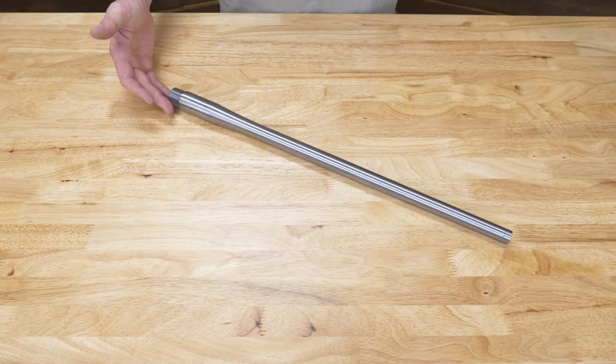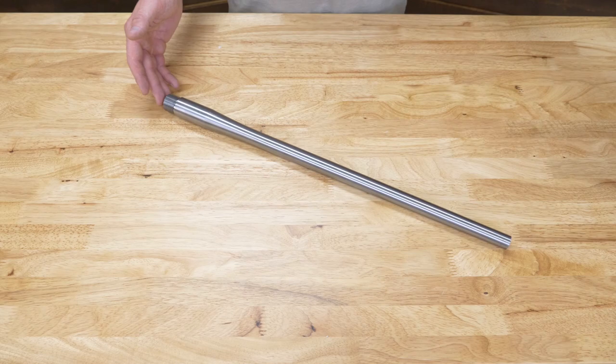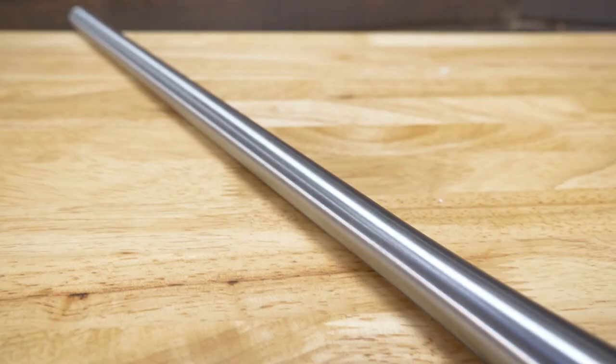Moving on, our next contour is going to be the sporter contours that we offer. Sitting in front of me, I do have a shouldered Impact Precision pre-fit barrel. This particular barrel is a number 2 sporter.